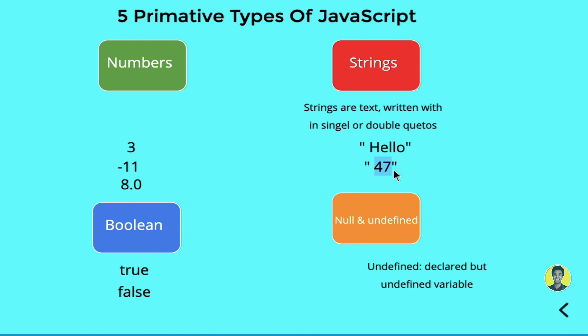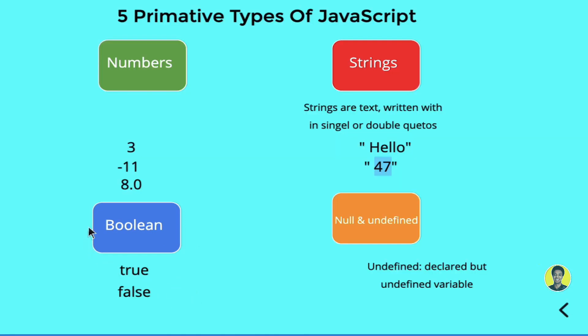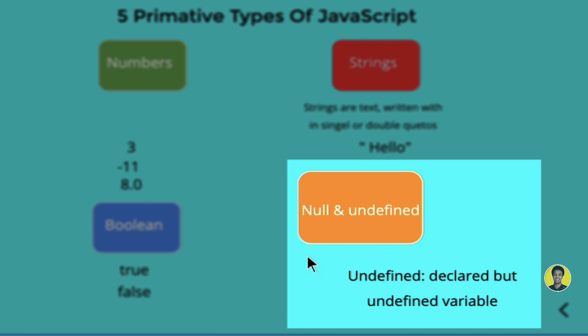Strings are text written in single or double quotes. Boolean values are true or false. This means something is either happening or not happening.